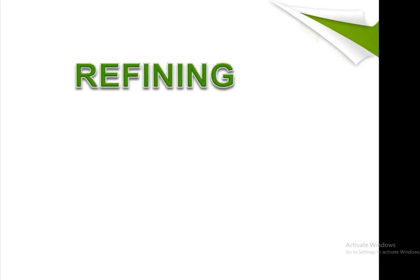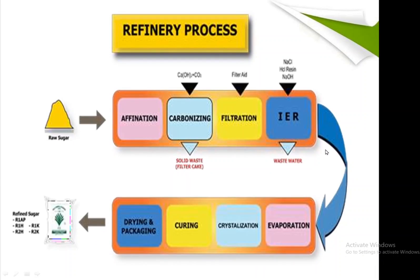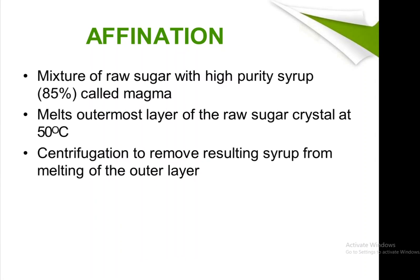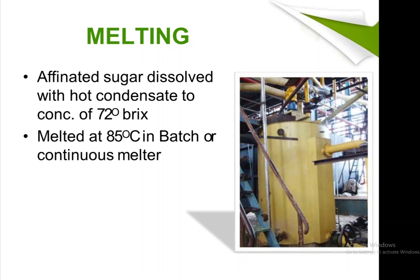The previous process produces brown sugar, also known as raw sugar, which is now refined to get white sugar. In the refinery process, the first steps are receiving and storage of raw sugar, then affination — where a mixture of raw sugar with high-purity syrup (85% magma) melts the outermost layer of sugar crystals at 50 degrees Celsius. Centrifugation removes the resulting syrup. Affinized sugar is then dissolved with hot condensate to a concentration of 72 degrees Brix and melted at 85 degrees Celsius in a batch or continuous melter.